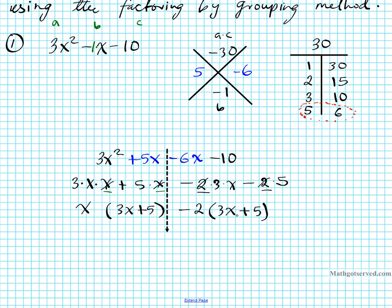Anytime you factor out a minus, the sign always changes to the opposite, because minus times plus is minus. Now if I did it correctly, this quantity and this quantity should be identical — just as I showed you in part one of the series. Since they are identical, I'll factor them out: 3x plus 5. And if I factor these two out, what am I left with? I'm left with x minus 2. So put those together — x minus 2 — and there is your factored form.